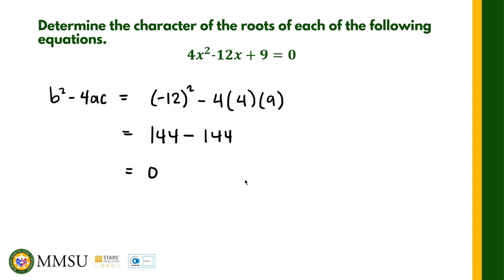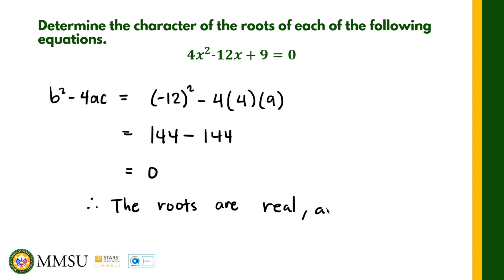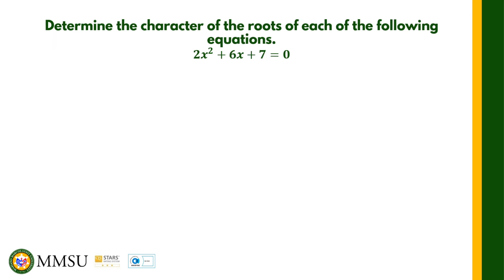The discriminant is zero, therefore the roots are real numbers. Since the discriminant equals zero, the roots are equal. So we have two real and equal roots in this case.